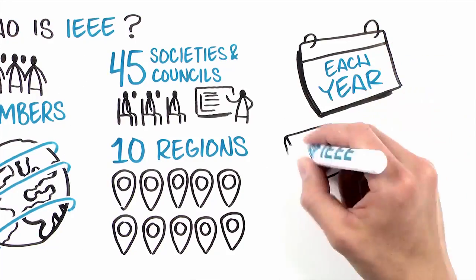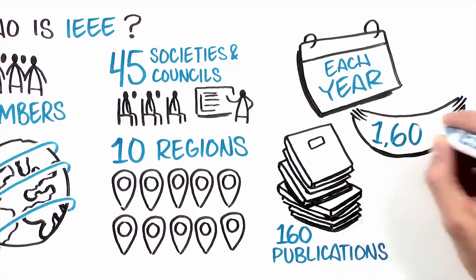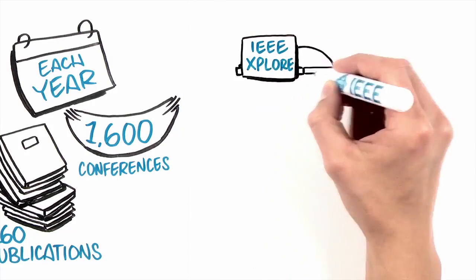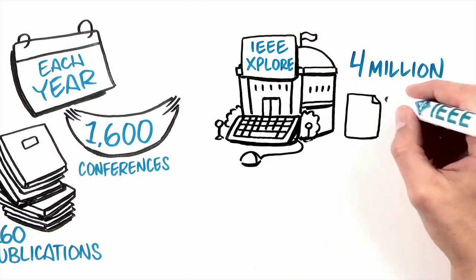And each year, we publish over 160 publications and hold more than 1,600 conferences. Our digital library, IEEE Xplore, houses nearly 4 million scholarly scientific documents.